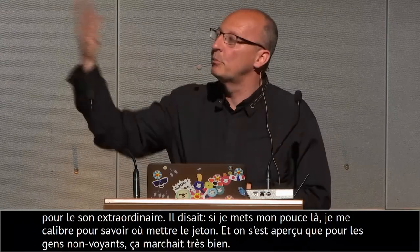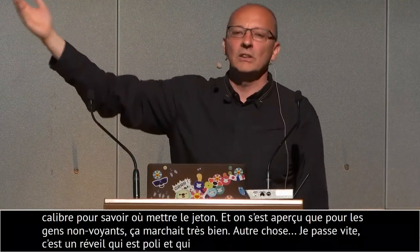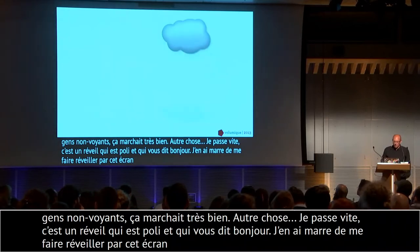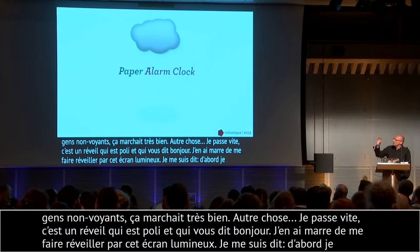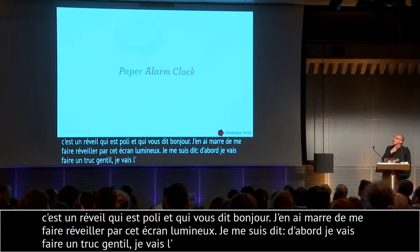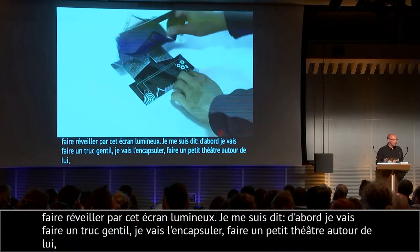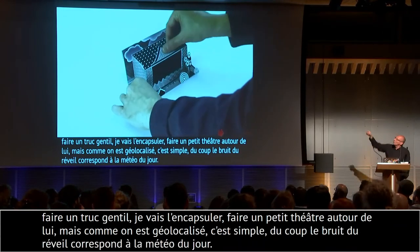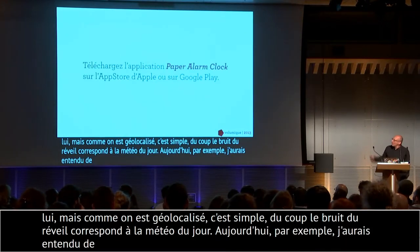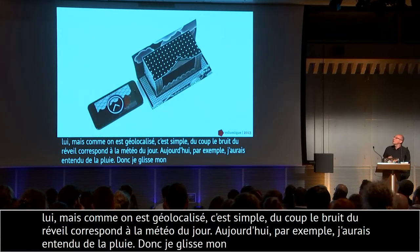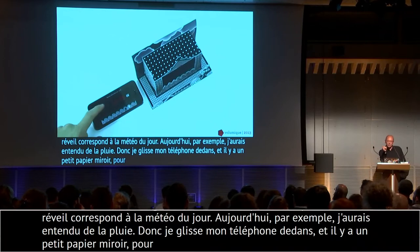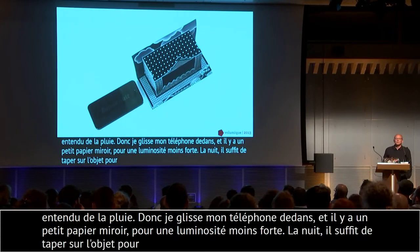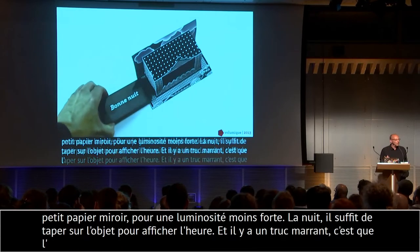Un réveil qui est poli et qui vous dit bonjour. J'en ai marre de me faire réveiller par cet écran lumineux qui fait bip bip bip. Je me suis dit : je vais faire un truc gentil — je vais créer un petit théâtre autour de lui. Comme on est géolocalisé, on sait où on est. Au lieu d'entendre bip bip bip, je glisse mon téléphone dans un petit étui en papier avec un miroir, comme ça la luminosité est moins forte. La nuit, si jamais vous voulez savoir l'heure, vous tapez un tout petit peu sur l'objet, l'accéléromètre dit « on va bouger » et affiche l'heure.